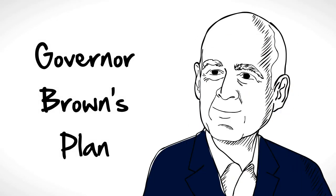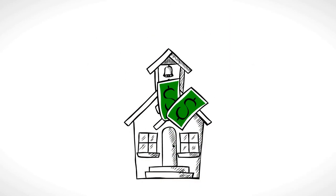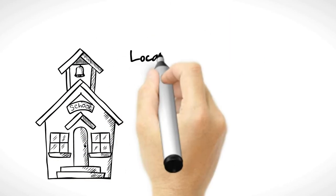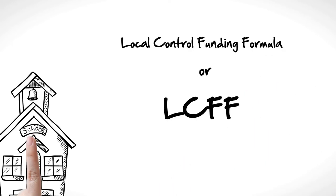The governor has a plan to fix these funding problems. He wants to improve the way we fund schools. The plan is called Local Control Funding Formula, or LCFF. The plan does the following.